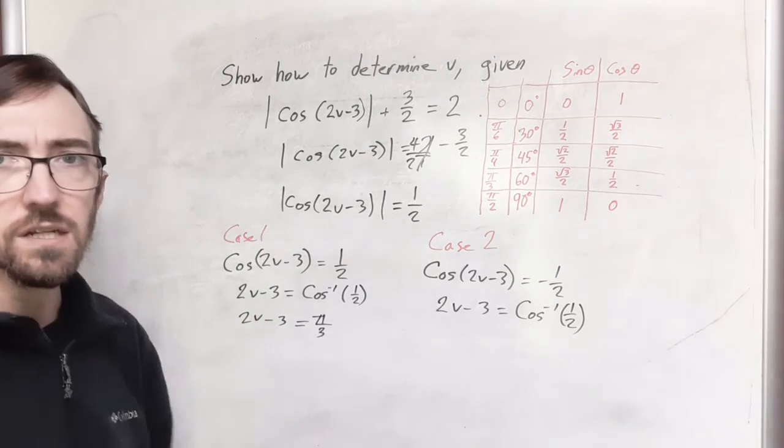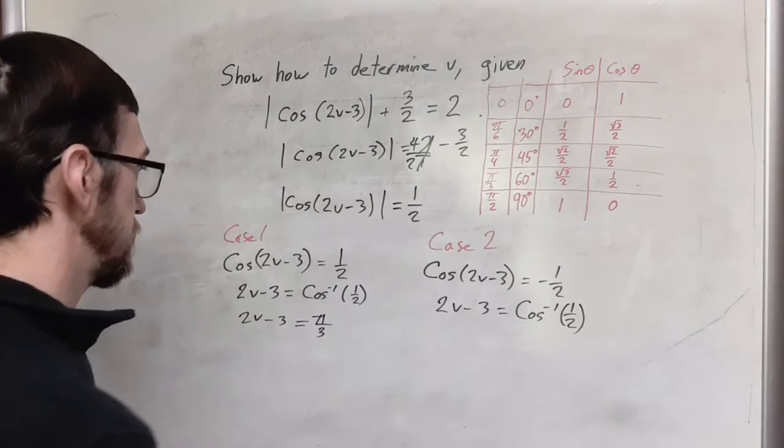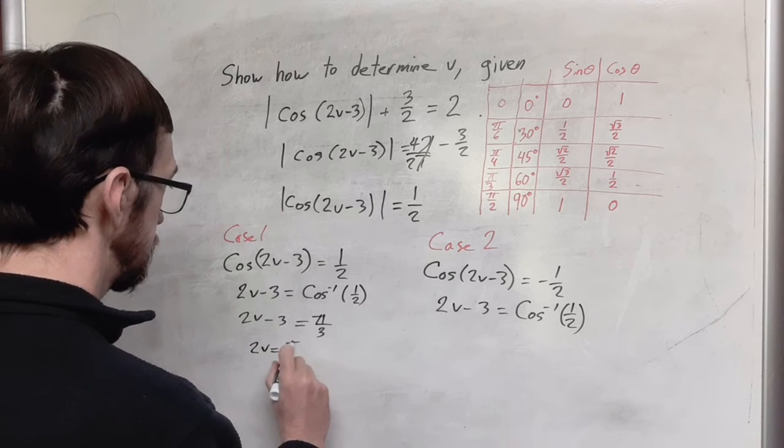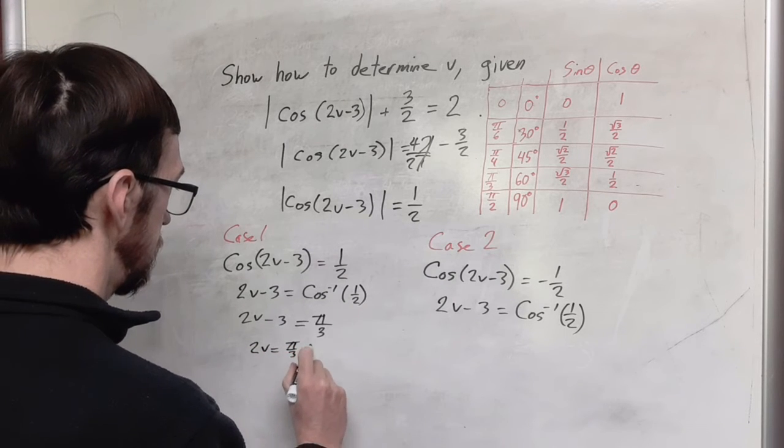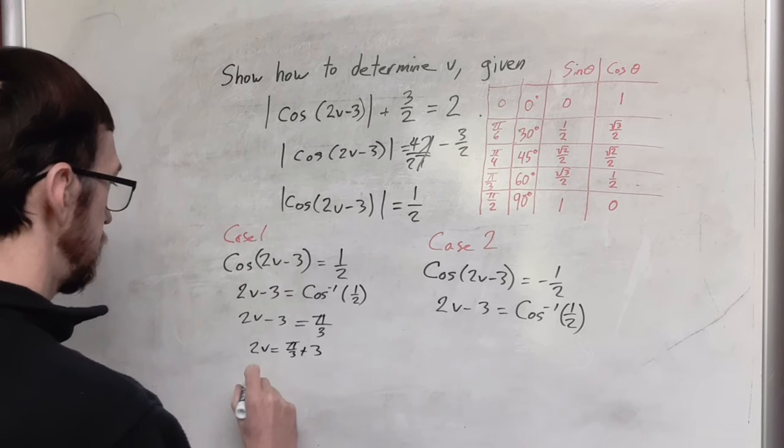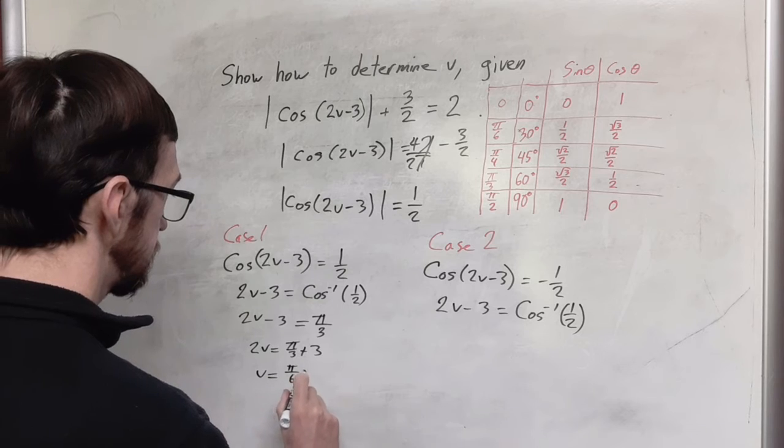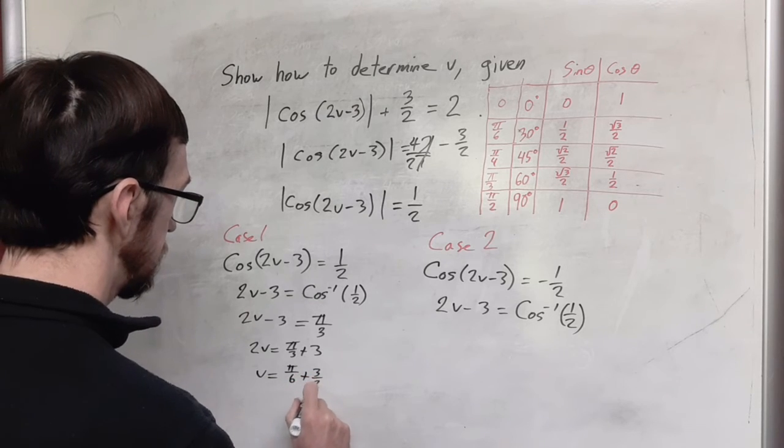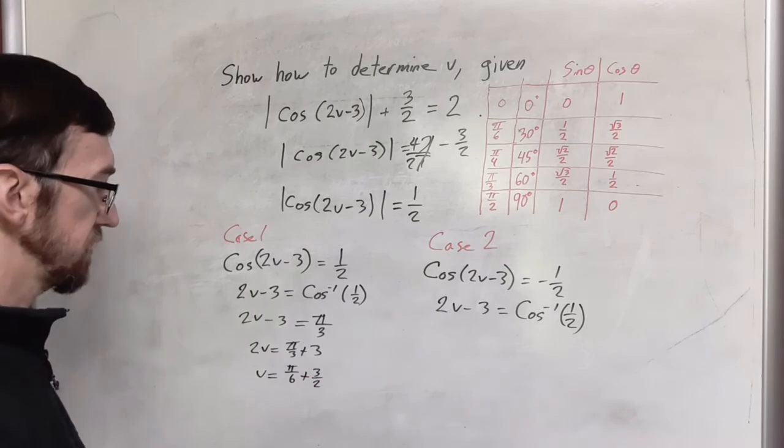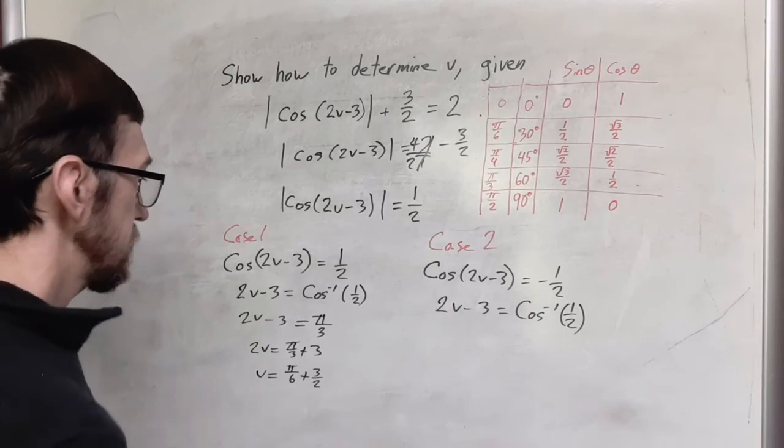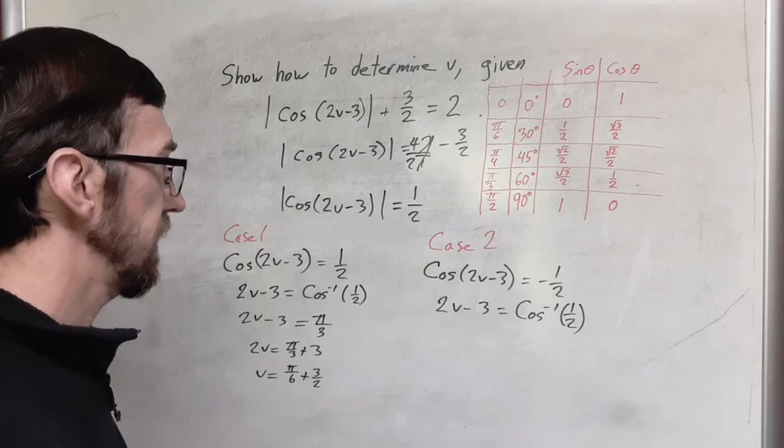And at this point it's kind of an algebra one exercise. We're going to add three to both sides. And then all of this is going to be divided by two so that we have pi sixths plus three halves and this is an exact value it's not an approximation. So there's one that we have there.